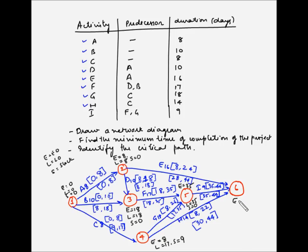For event 6, the earliest occurrence depends on activities E, I, and H. The earliest finish times are 24 for E, 44 for I, and 22 for H. So the earliest occurrence for node 6 is the largest, which is 44. The latest occurrence is also 44, and slack is 44 minus 44 = 0. We have now found the earliest and latest occurrence and slack for all events.